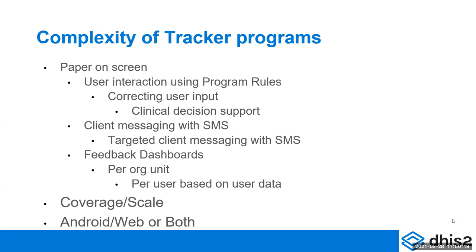You just look at the paper and exactly what it is on screen. But we can also make it more complex by giving user interaction using program rules. And it can be as simple as just correcting user inputs. For example, if you put in some information that is not correct, the system will respond and say this is not the correct range — for example, blood pressure.